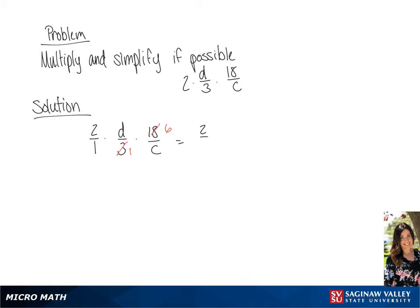Once it's simplified, we will have 2 over 1 times d over 1 times 6 over c. And if we multiply across, we get a final answer of 12d over c.